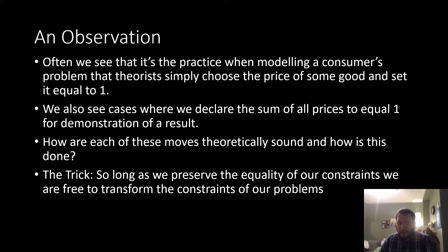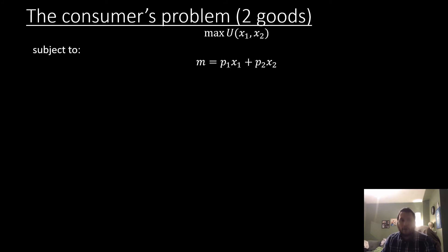The trick that we have to note here is so long as we preserve the equality of our constraints, we are free to transform the constraints of our consumer's problem at will. So recall our standard intermediate microeconomics problem where we're maximizing our utility where we have two goods x1 and x2 subject to our budget constraint.